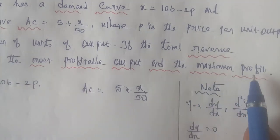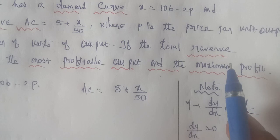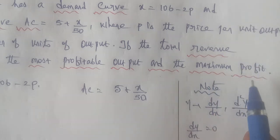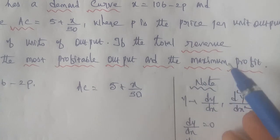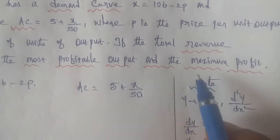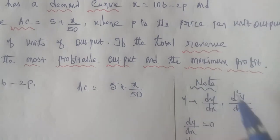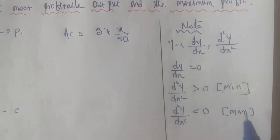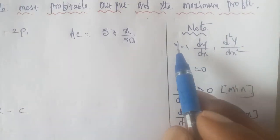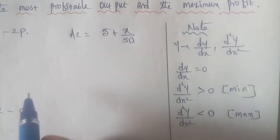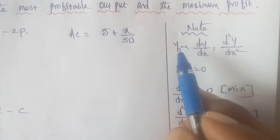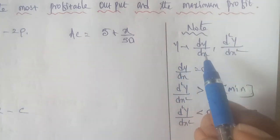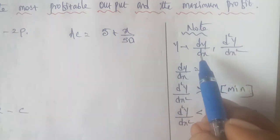In this sum we need to find the maximum profit. For maximum and minimum problems, we use the following rule: first, find the function y in terms of x. Then differentiate once with respect to x to get dy by dx.